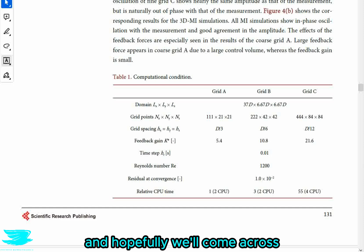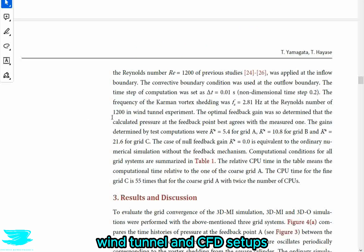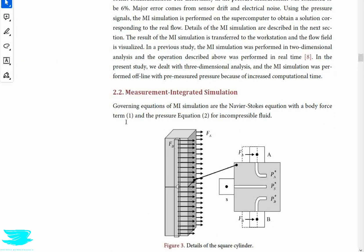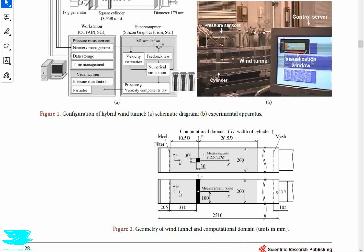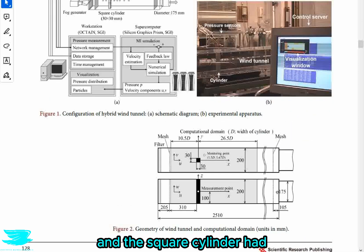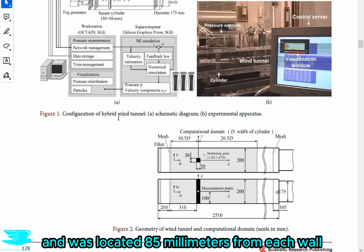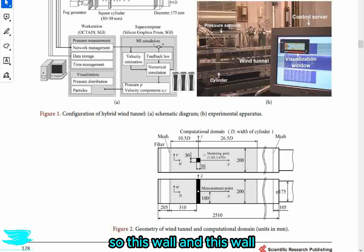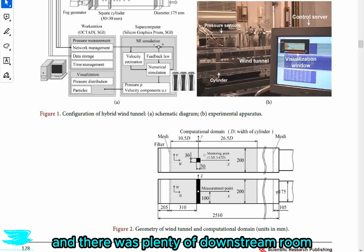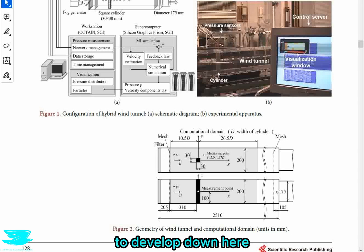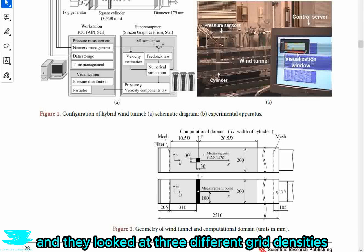Or maybe the introduction of the transient data may somehow make the steady state CFD become more quasi-transient. These are all interesting questions, and hopefully we'll come across papers in the future that will answer them. So anyway, in figure two, we see their wind tunnel and CFD setups. And the square cylinder had a length of 30 millimeters and was located 85 millimeters from each wall. The mesh was 300 millimeters upstream, and there was plenty of downstream room over two meters for the flow to develop.